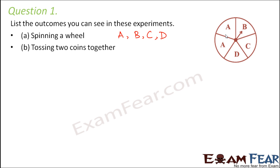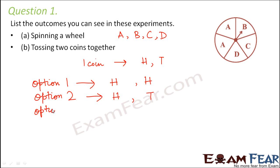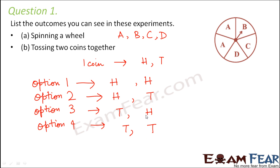Tossing two coins together: any one coin has two options — it can give you a head or a tail. When you toss two coins together, the options are: both heads (HH), first head and second tail (HT), first tail and second head (TH), and both tails (TT). So the total possible outcomes are four.